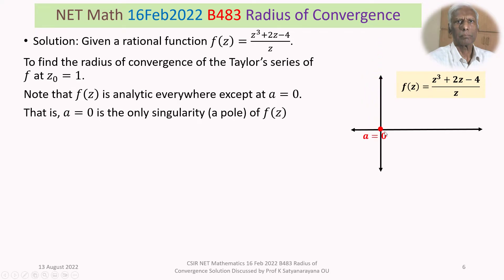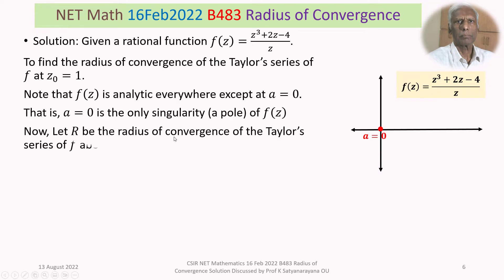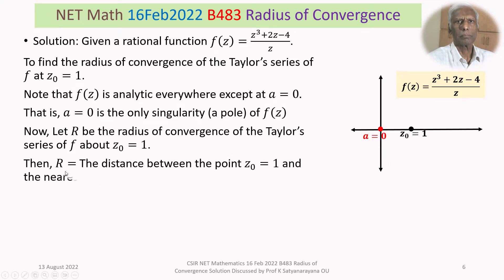That singularity is at the origin, z = 0. Now let r be the radius of convergence of the Taylor series of f(z) about the point z₀ = 1. Then r equals the distance between the point z₀ = 1 and the nearest singularity. In this case there is only one, at z = 0, and the distance between z₀ = 1 and z = 0 is 1. Therefore r = 1.